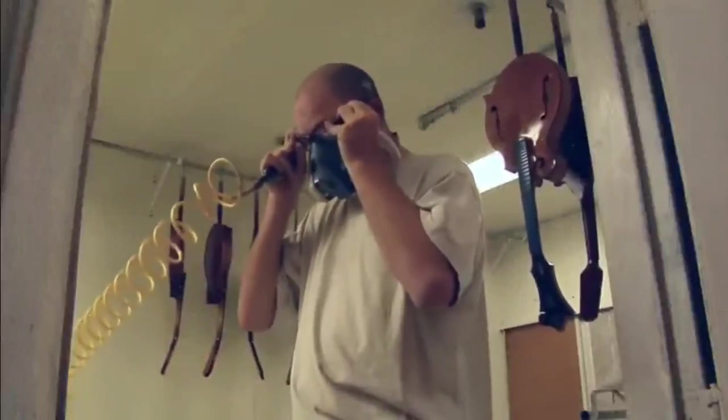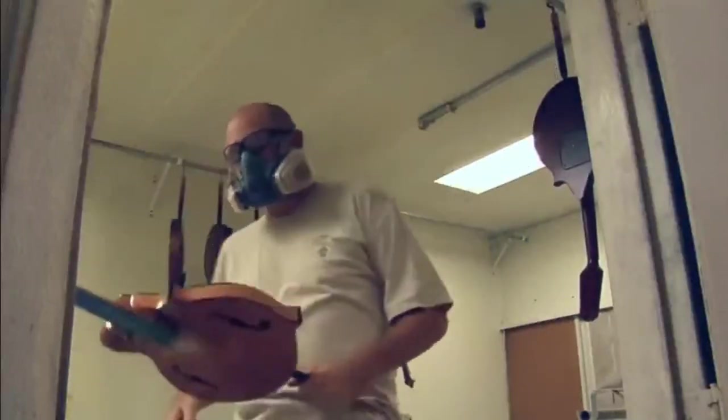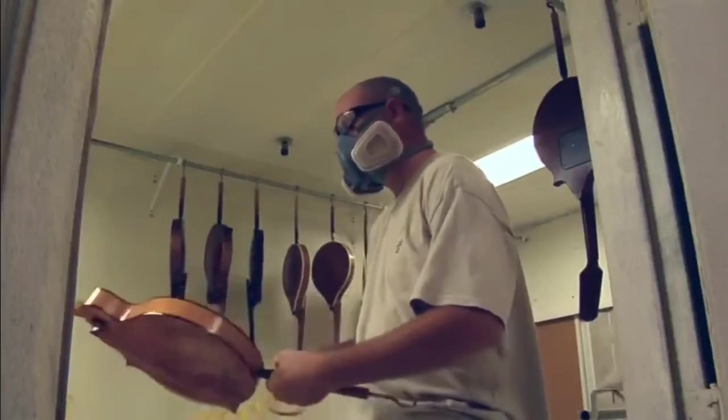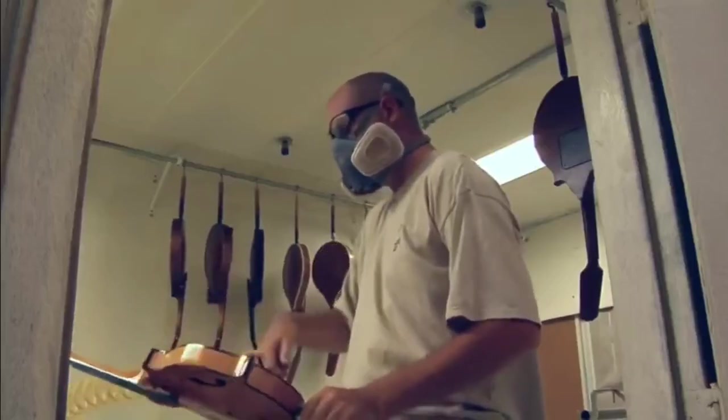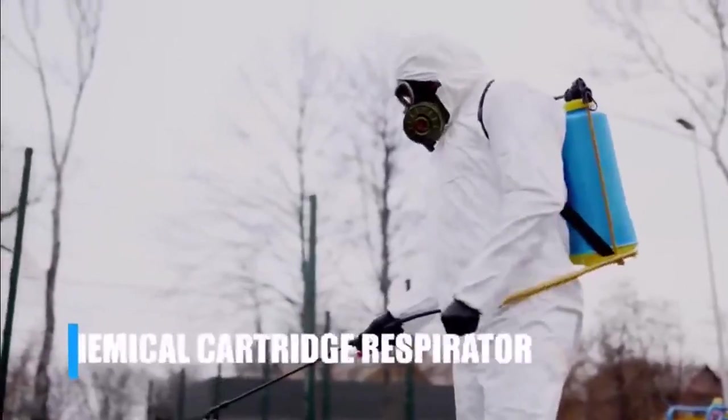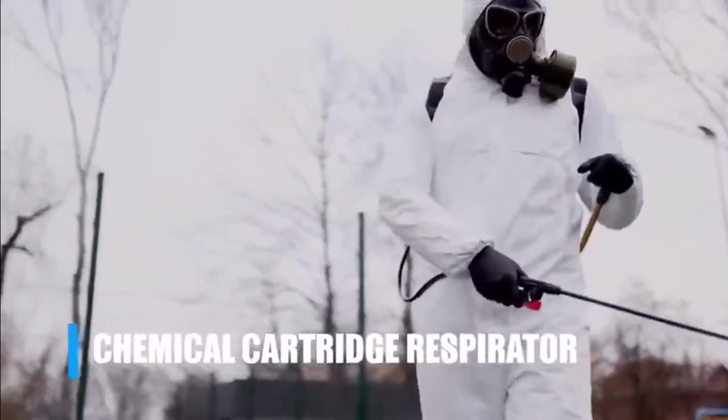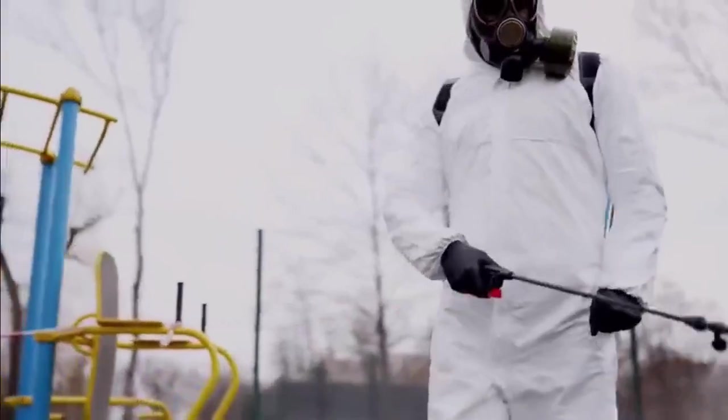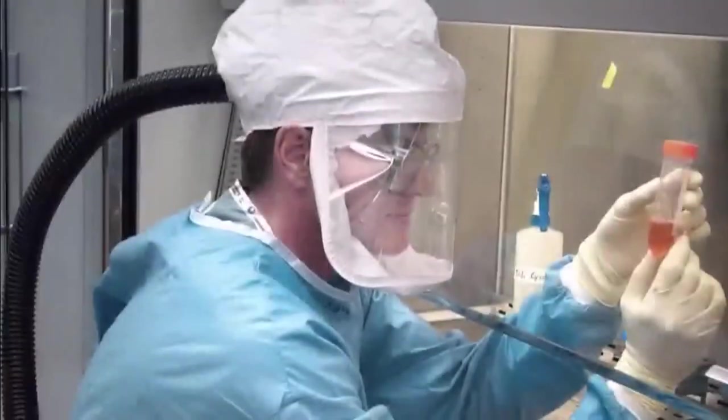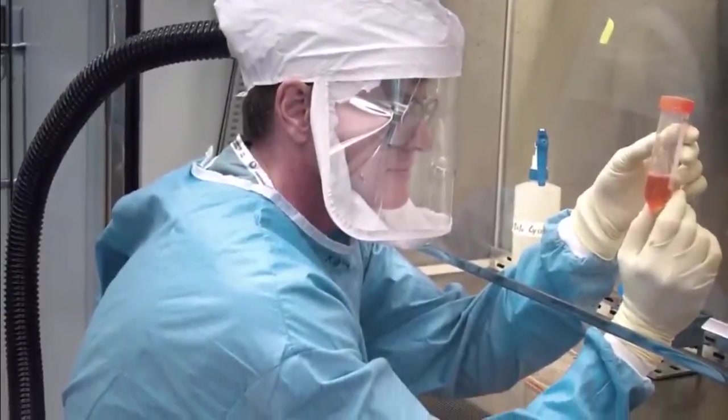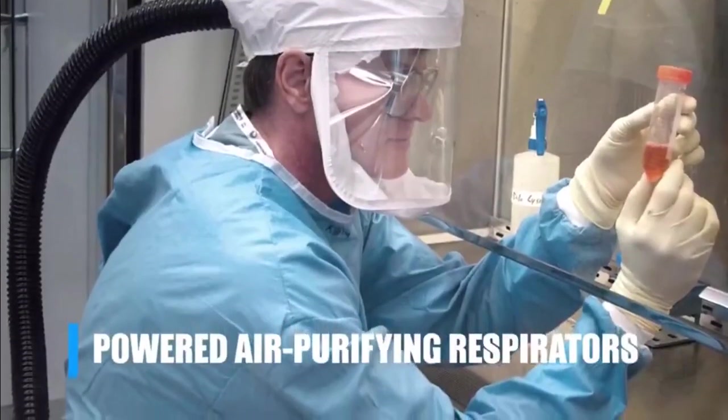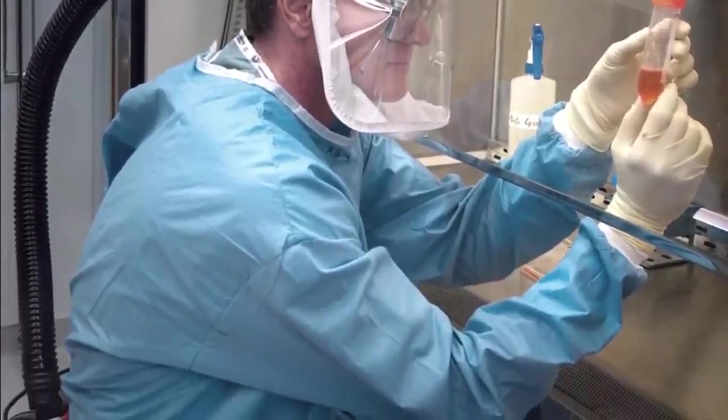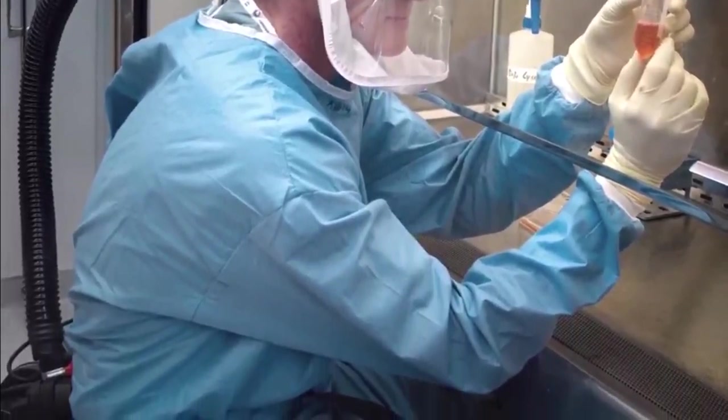N95 respirators are part of a class of respiratory protection devices known as mechanical filter respirators. These mechanically stop particles from reaching the wearer's nose and mouth. Another form of respiratory protection is the chemical cartridge respirator. These are specifically designed to chemically remove harmful volatile organic compounds and other vapors from the breathing air. Both classes of respirators are available in powered configurations, known as powered air purifying respirators. These devices use battery powered blowers to force air through either a chemical or mechanical filter, allowing for the use of more aggressive filtration.